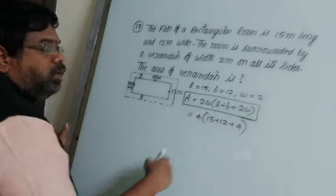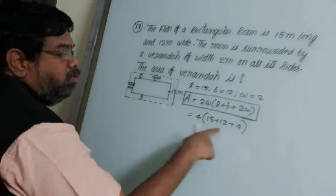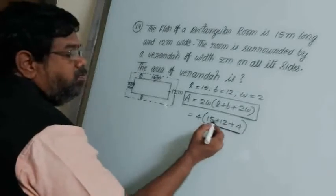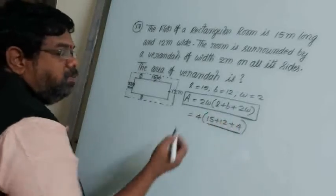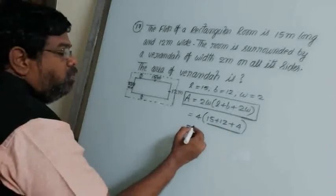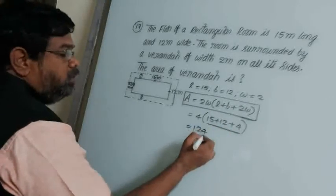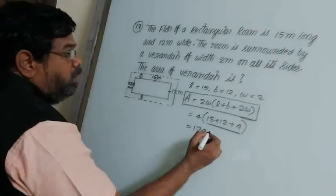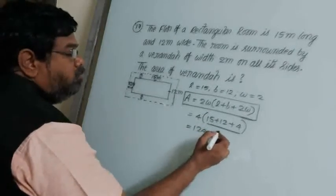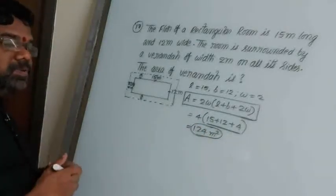So the area = 4 × 31 = 124. The area of the veranda is 124 square meters.